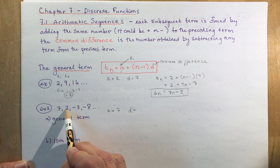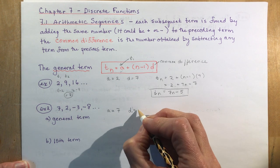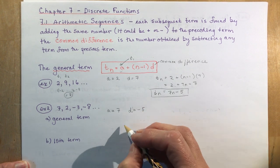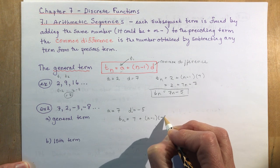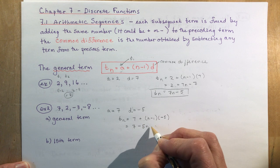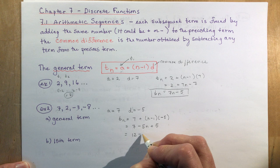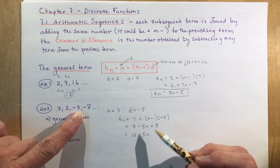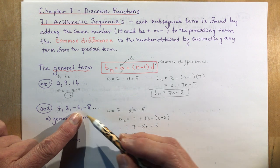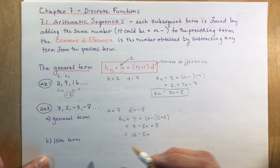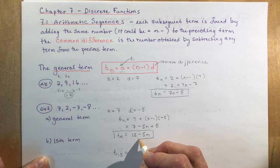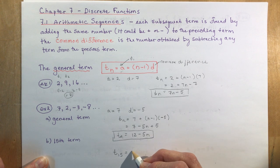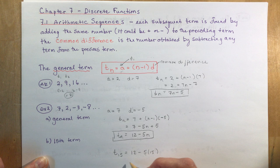From 7 to 2 you subtracted 5; from 2 to −3 you subtracted 5. So d = −5. Plugging into the formula: tn = 7 + (n − 1)(−5), which simplifies to −5n + 5 + 7, giving tn = 12 − 5n. To find the 15th term: 12 − 5(15) = 12 − 75 = −63.